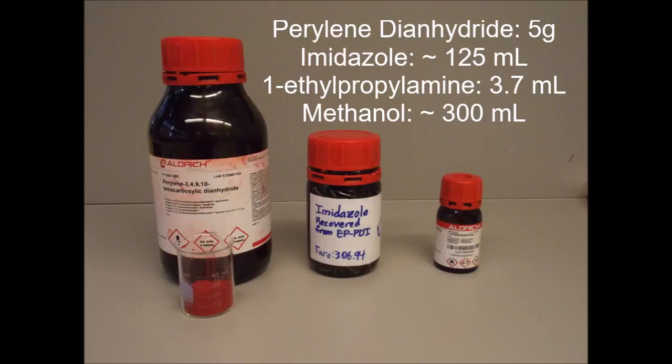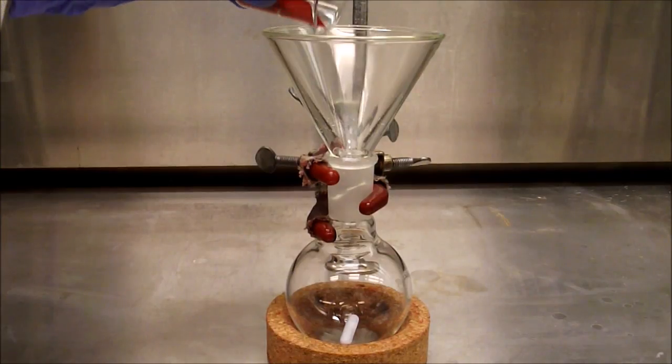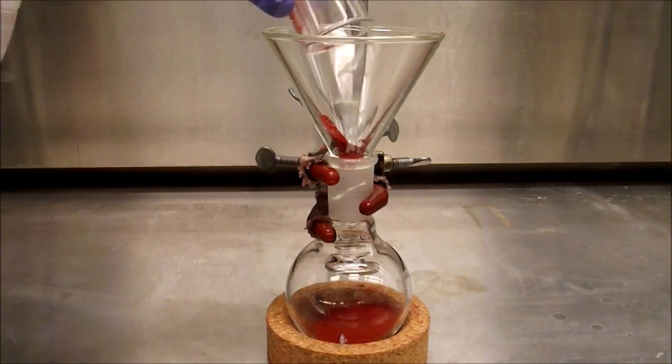First, five grams of perylene dianhydride is added to a 250 milliliter round bottom flask.